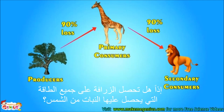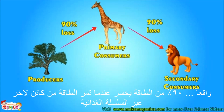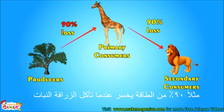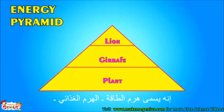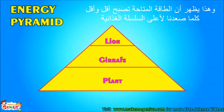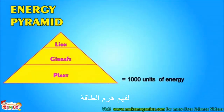Does the giraffe get all the energy from the plant, or does the lion get all the energy from the giraffe? The answer is no. Actually, 90 percent of energy is lost when it passes from one part of the chain to another. This is shown by the energy pyramid, which shows that available energy becomes less and less as we move up the food chain.